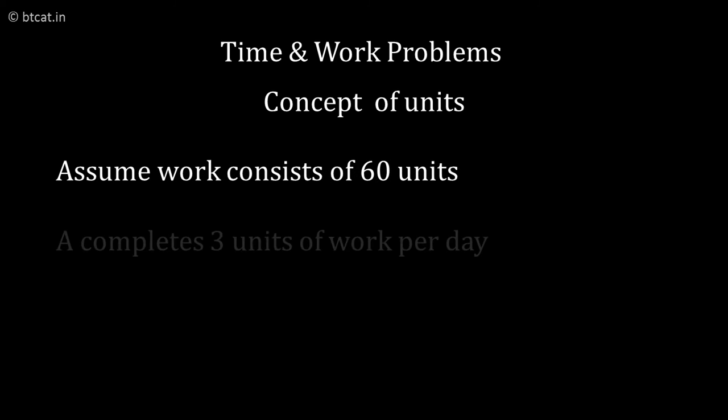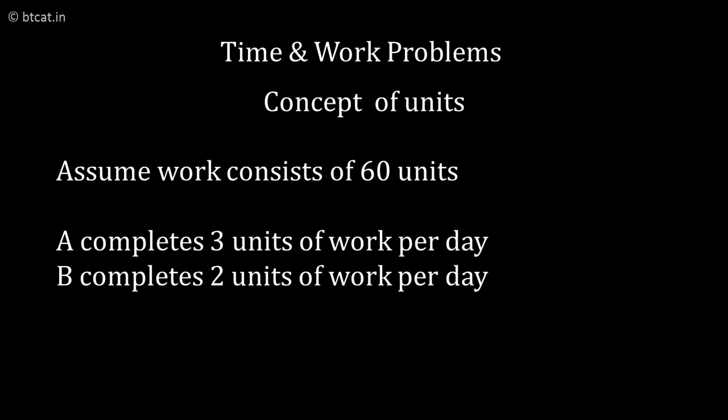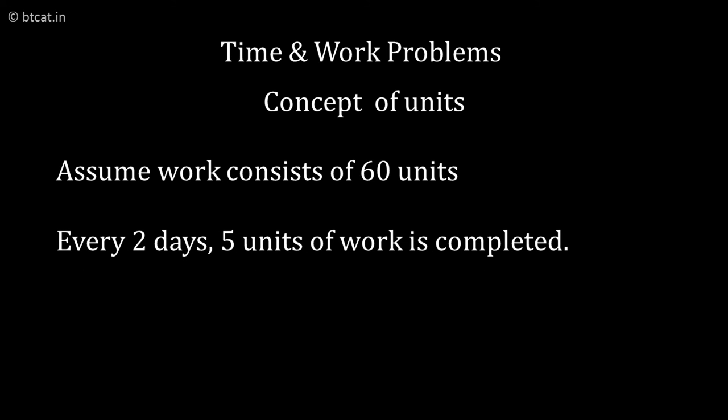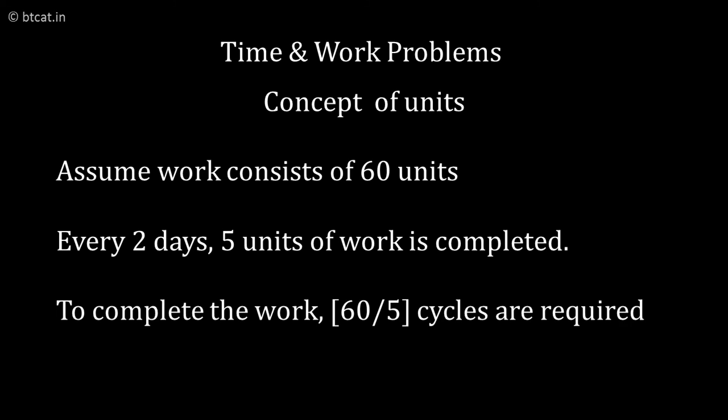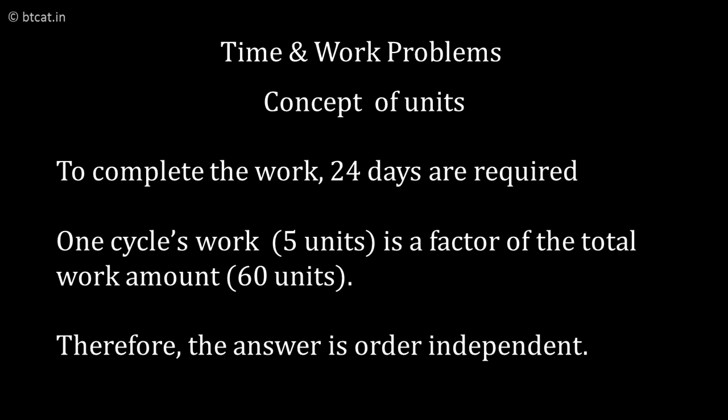If I take that A starts the work, the total work is 60 units. A can do 3 units and B can do 2 units per day. Together they are doing 3 plus 2, 5 units in exactly 2 days of time, not 1 day, but 2 days because it is alternate days and not together. So 5 units of work is happening in every 2 days. Therefore to get to 60 units it will require 12 cycles, therefore 24 days is the correct answer.